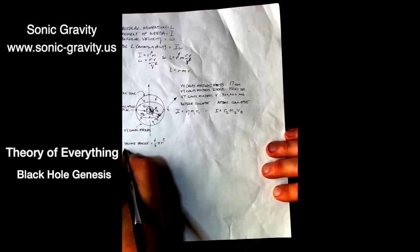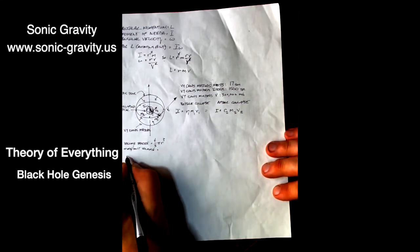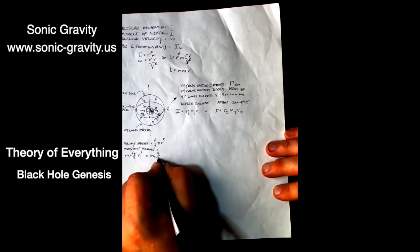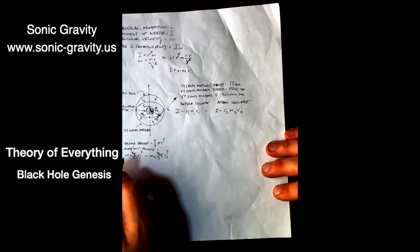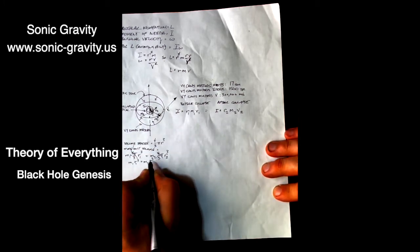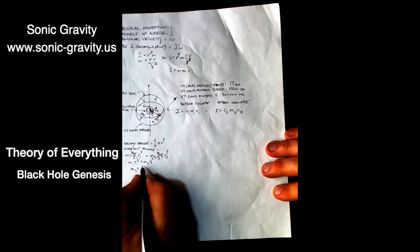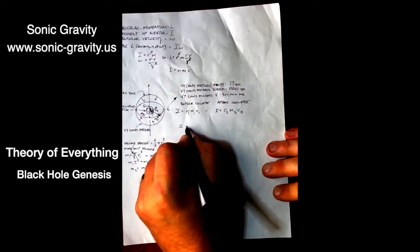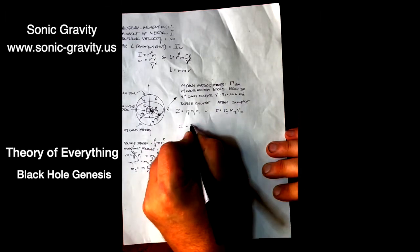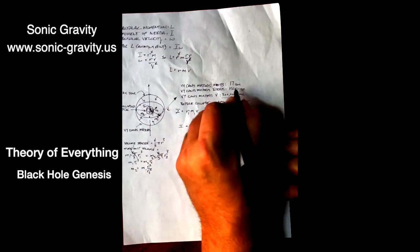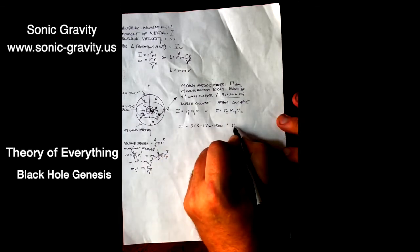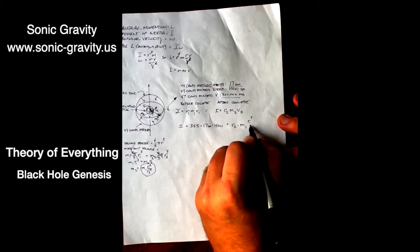The example star I used to compute the radius is Vy Canis Majoris. Its mass is 17 solar masses. Its outer radius is 1500 times the solar radius. Plug all that in and the radius at which the core of Vy Majoris when it supernovas achieves the speed of light will be 47 kilometers. The Schwarzschild radius, the incorrect scientific consensus about the radius of a black hole, I looked it up on the internet and it's 50. So it's actually pretty close.